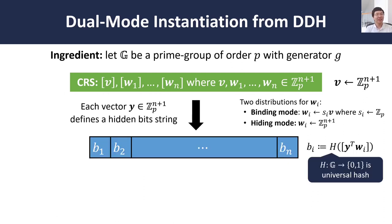Much like in the original CDH construction, we have to have a way for the CRS to induce a particular hidden bit string. Here, every vector y in Z_p^{n+1} will define a hidden bit string. To define it, we take the corresponding component in the CRS, in this case wᵢ, compute the inner product between y and wᵢ, and hash it. Here we require a universal hash — so recall that before we were using a hardcore function for DDH; now we are using a high-min entropy universal hash function. The commitment is the inner product between y and v, which is a single group element independent of the length of the hidden bit string, which is important for succinctness.